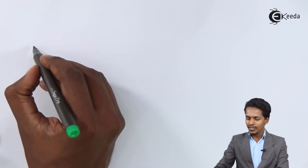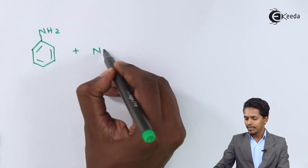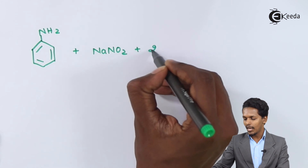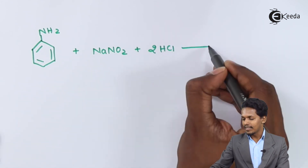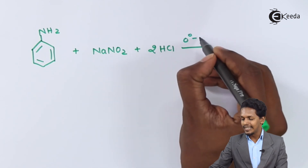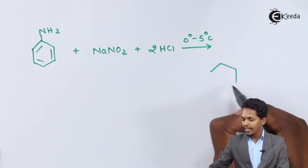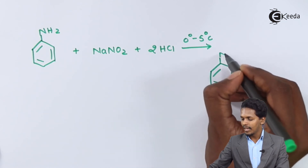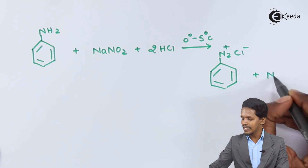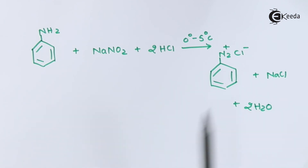Talking about aryl amines, when aniline (C6H5-NH2) is treated with NaNO2 and HCl, the diazotization process takes place at a low temperature of 0°C to 5°C. The NH2 group is converted into N2+Cl-, and the product obtained is phenyl diazonium chloride, with NaCl and two moles of H2O as byproducts. This is how we can easily prepare diazonium salts through the diazotization process.